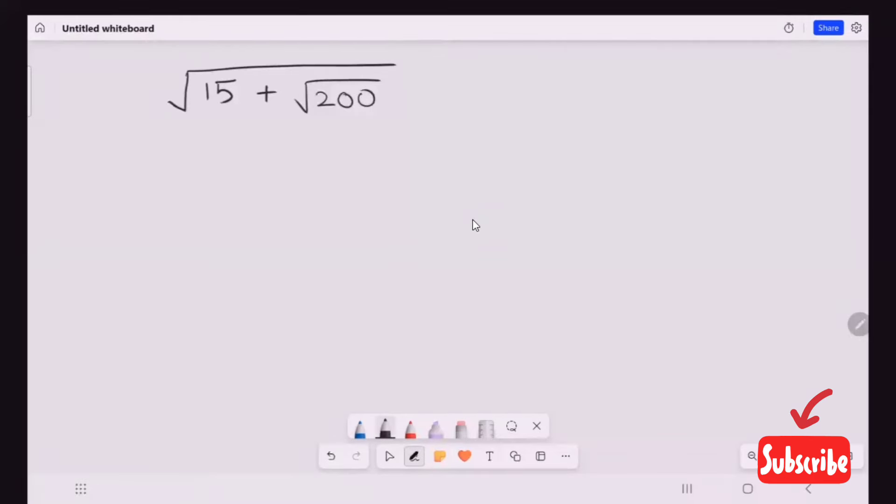Here we have the expression radical within the radical. Radical 15 plus radical 200. I'm going to solve this. There we go. 15 plus 4, 50 times give you 200. I'm going to solve this, we're applying this formula.